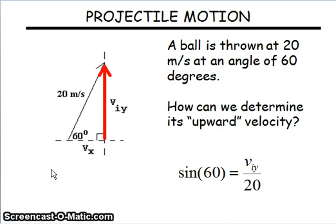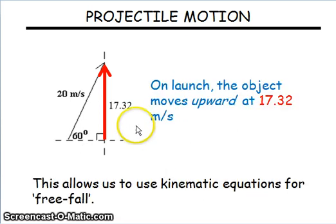The sine of 60 is the opposite over the hypotenuse. That will come out to 17.32. You must be in degree mode to do that. If you're in radian mode, you won't get that answer. And that allows us to use kinematic equations. You throw it at 20 meters per second, but it's only going up at 17.3.